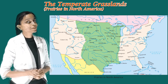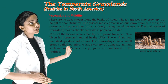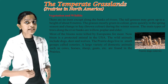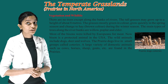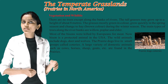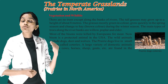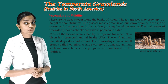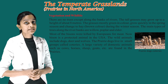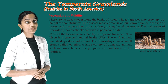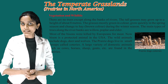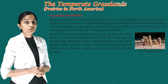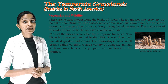There are no trees except along the banks of rivers. The tall grasses may grow up to a height of about 8 meters. The grass is mostly green in color, grows quickly in the spring season, and changes to a hay-brown color during the winter season. The main types of trees along the river banks are willow, poplar, and elder.